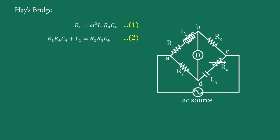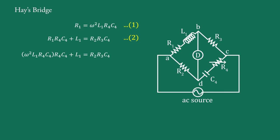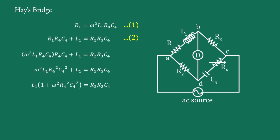These two equations are not the final balance equations because both contain R1 and L1. So we do further simplification: substituting the value of R1 from equation 1 into equation 2, we obtain omega²·L1·R4·C4·R4·C4 + L1 equals R2·R3·C4. Taking L1 common, L1·(1 + omega²·R4²·C4²) equals R2·R3·C4. Therefore, L1 equals R2·R3·C4 upon (1 + omega²·R4²·C4²) — equation 3.